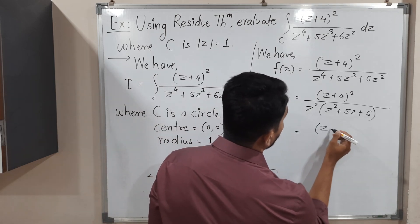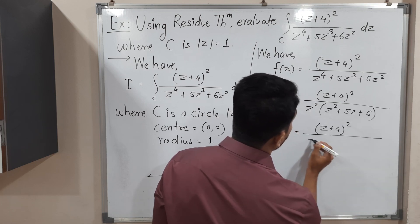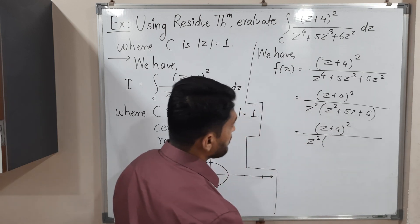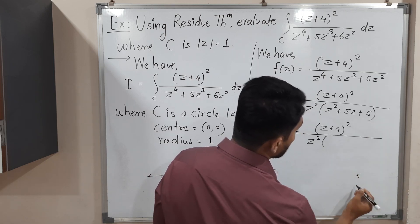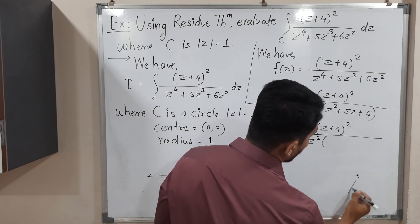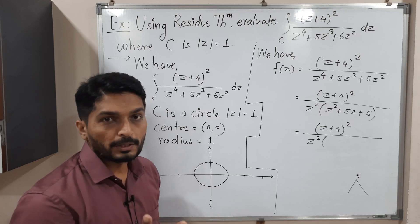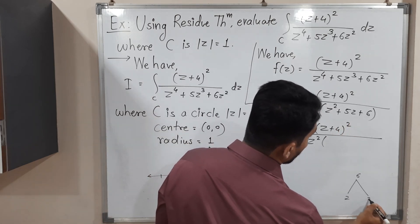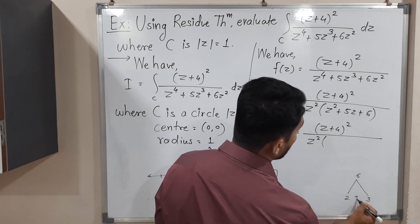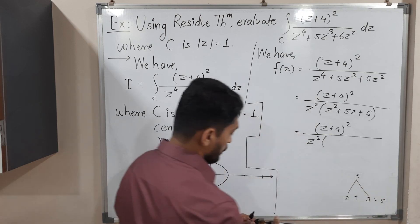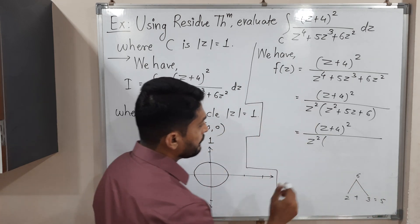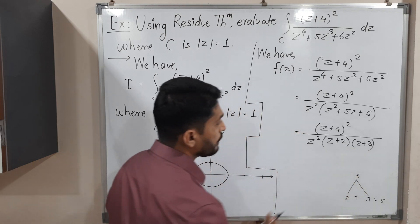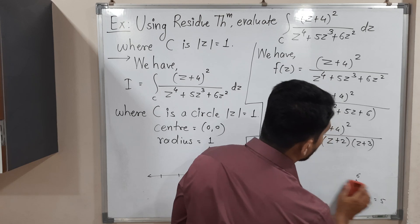We have (z + 4)² upon z² × (z² + 5z + 6). For the quadratic, the last coefficient is 6. We need two numbers whose product is 6 and sum is 5 — that is 2 and 3. So the factors are (z + 2)(z + 3). Thus we have expressed the denominator as z²(z + 2)(z + 3).